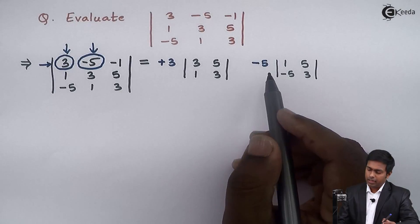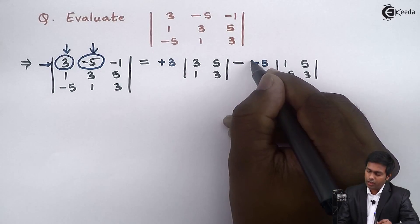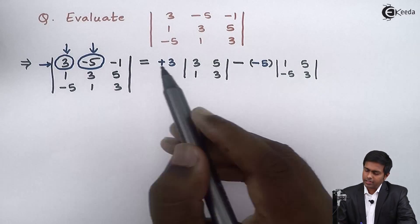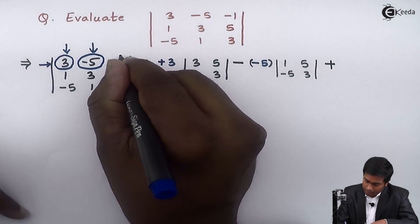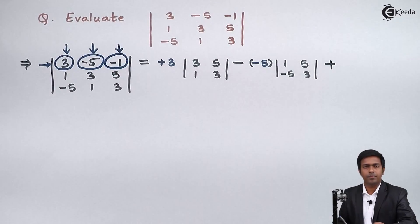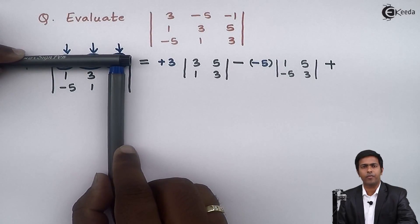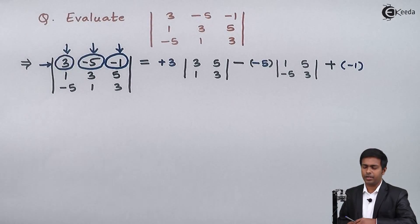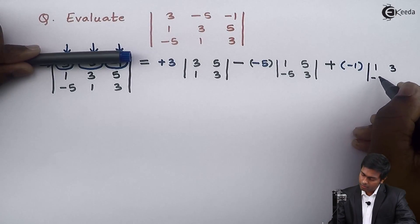The second term is negative, so that negative sign applies to -5. The third term is positive. The third element is -1, located in the first row, third column. We hide the first row and third column, leaving 4 elements: 1, 3, -5, and 1. We find the determinant of these and multiply it with -1.